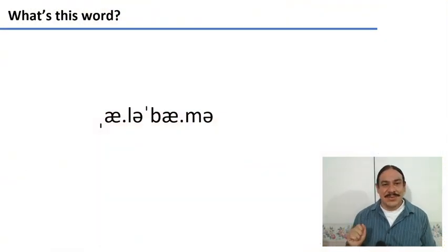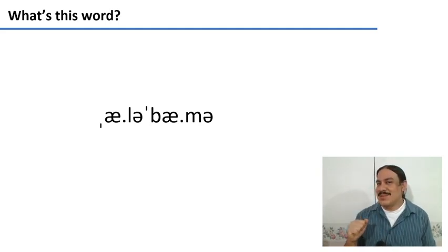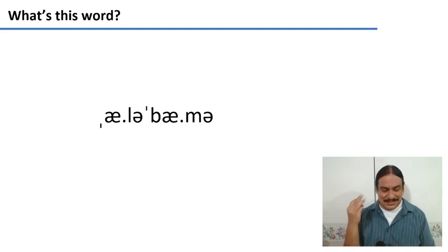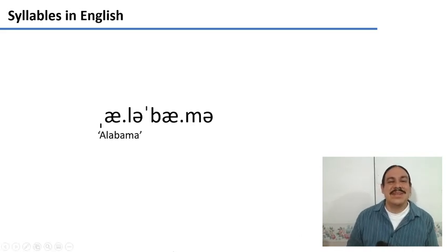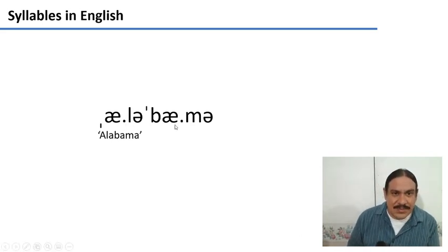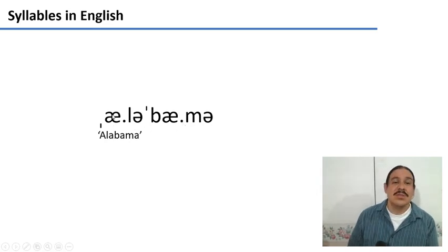And before we begin, here's a little IPA challenge. This is a word in English transcribed into IPA. Can you read this word and tell us what it is? Please pause the video. This English word is Alabama. So you can see the dots here are separating the syllables of the word. We don't usually need to put dots in between syllables, but they can be added if you want to emphasize the separation between the syllables in the International Phonetic Alphabet. So we have one, two, three, four. Alabama.